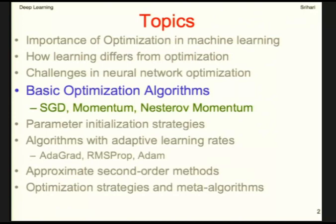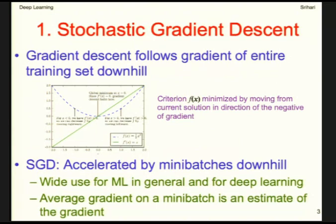Today we're covering stochastic gradient descent, momentum, Nesterov momentum, and parameter initialization strategies. Then there are methods with adaptive learning rates, and approximate second-order methods. As a review: gradient descent follows the gradient of the entire training set downhill. If the blue curve is the loss function with parameter x, we compute the gradient and move opposite to its sign — if the gradient is negative we move positively, if positive we move negatively. That's why we take the negative of the gradient.